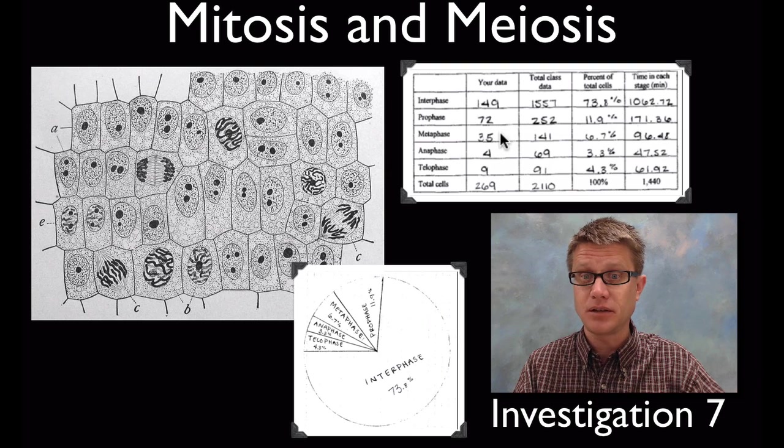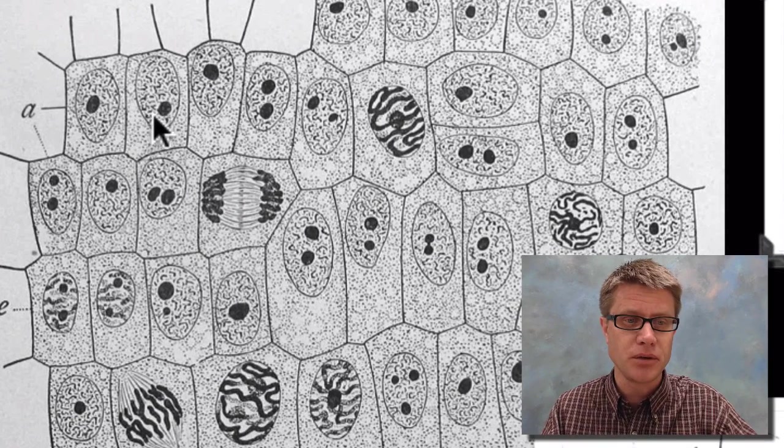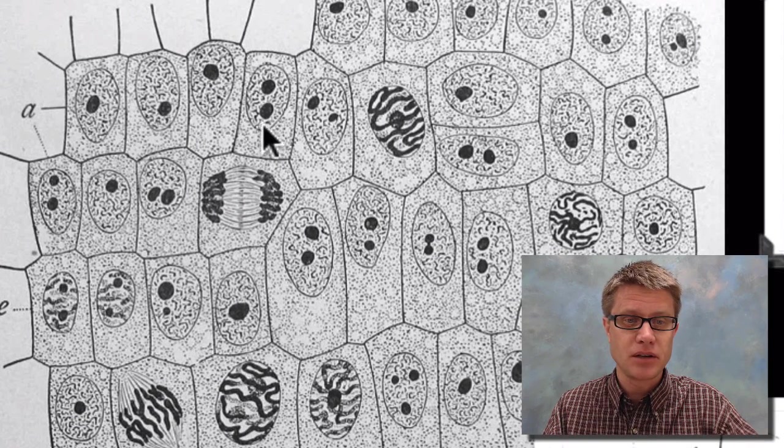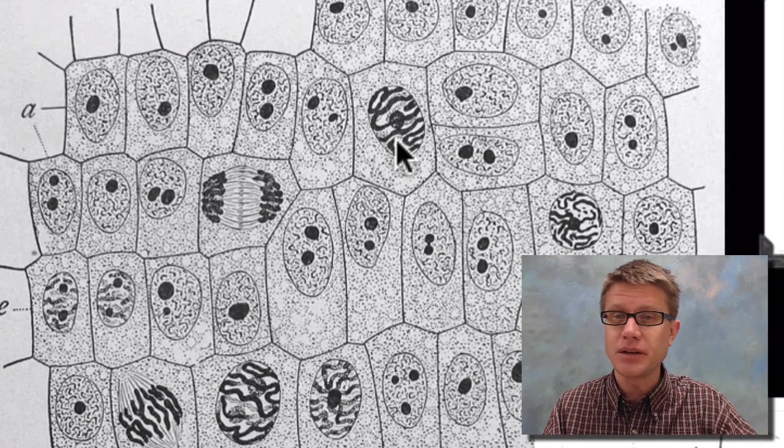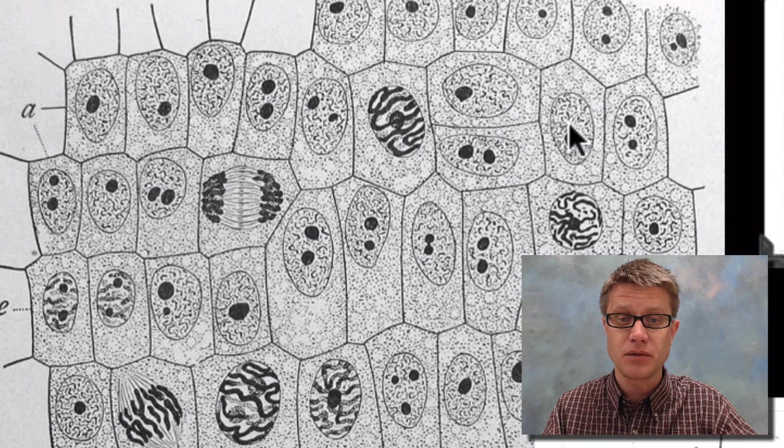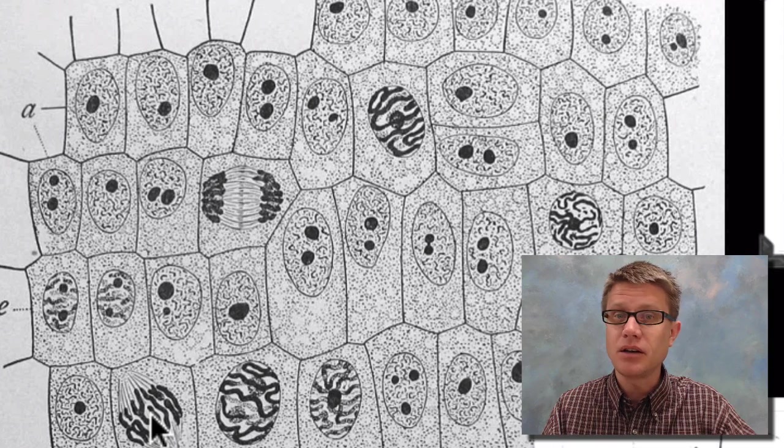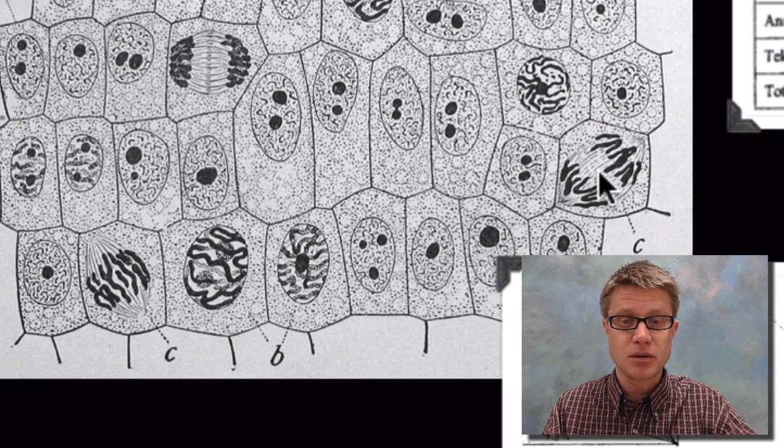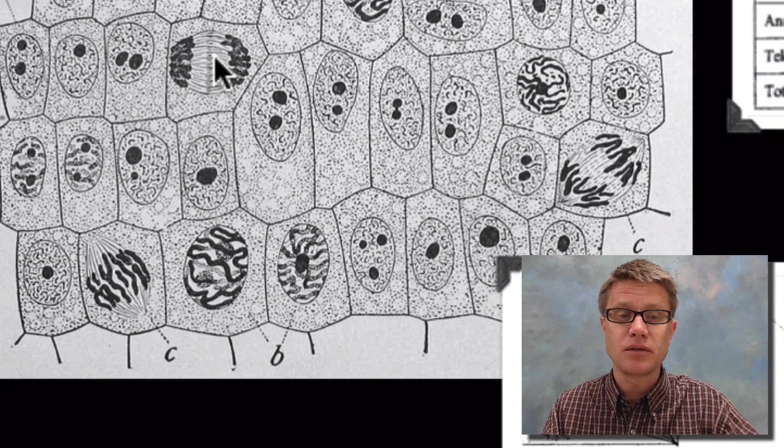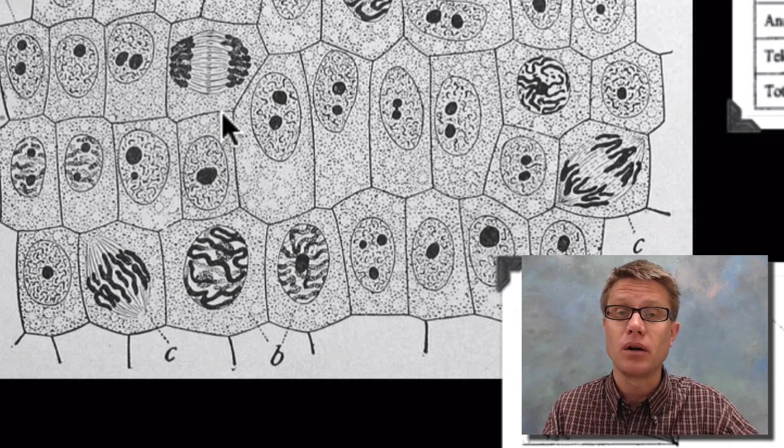If we were to go through these: this would be interphase, interphase, interphase, interphase, interphase, prophase because we can see the chromosomes, interphase, interphase, interphase, interphase, interphase, prophase. This would be metaphase down here. This would be anaphase—they're pulling apart over here. This would be telophase right here; it's starting to form a new cell wall.